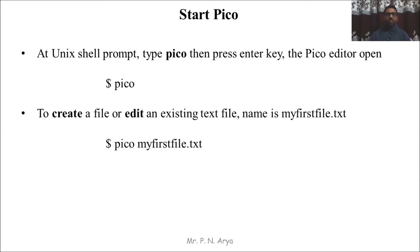To start Pico, at the Unix shell prompt type 'pico' and then press Enter — the Pico editor will open. To create a file or edit an existing text file, for example a file named 'my_first_file.txt', type 'pico my_first_file.txt'.